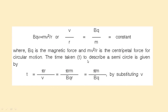The time T to describe a semicircle is given as follows. The distance traveled is the perimeter of the half circle, which is πR. Since speed is V, time equals distance by velocity, so T = πR/V. Substituting V/R = QB/M, we get T = πM/BQ. This is the expression for the time to complete a semicircle.